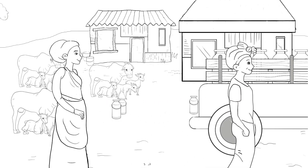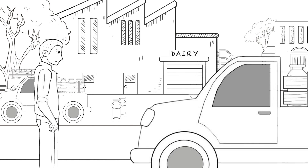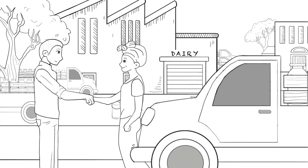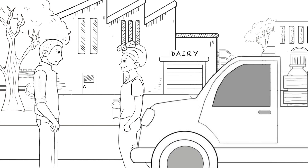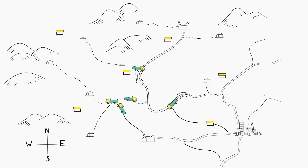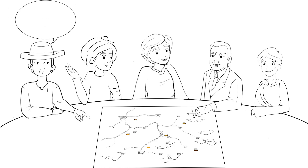Petra's story is just one example of transforming market systems to realize the economic and human potential of people living in poverty. It exemplifies a development approach that can achieve both large-scale impact and lasting change. Instead of handouts, the approach pursues commercial and social benefits in tandem.